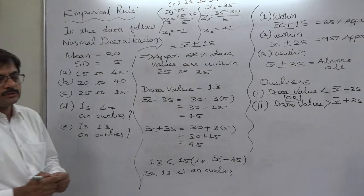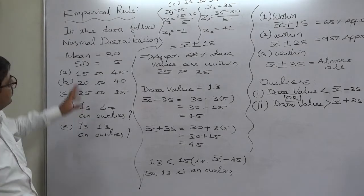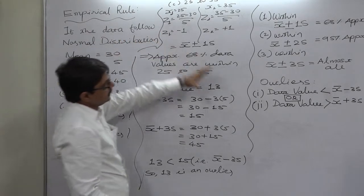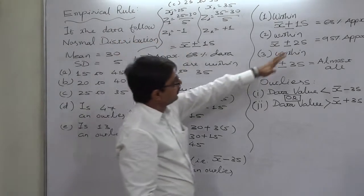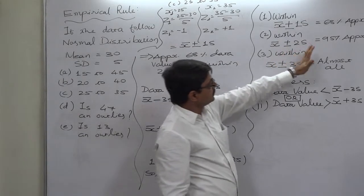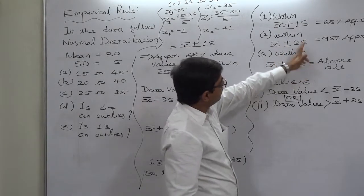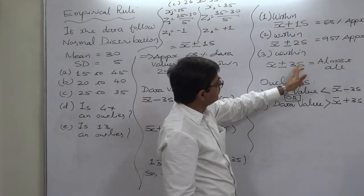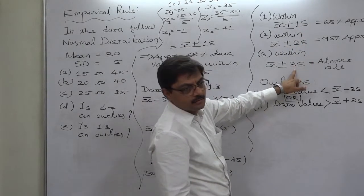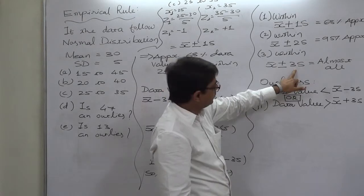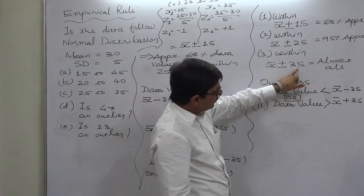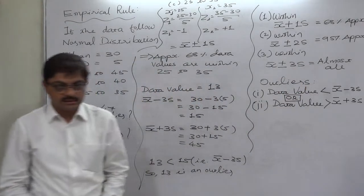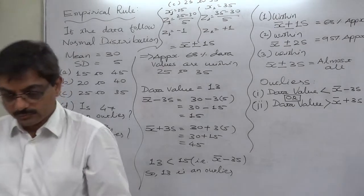This is the complete concept of the empirical rule — the broad observations for Z values of 1, 2, and 3 — along with the concept of outliers. Thank you.